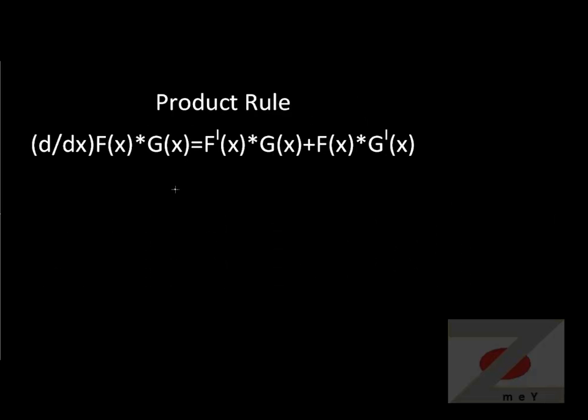Product rule might be a little more complicated to understand. If you have two functions multiplied by each other, then the derivative of two functions would be derivative of the first one times the second plus the first one times derivative of the second. Product basically implies multiplication of two functions.